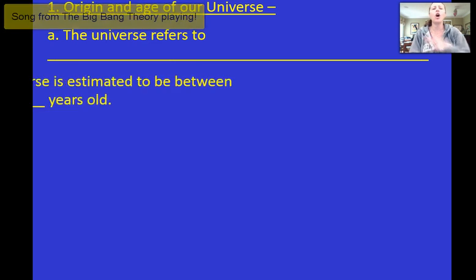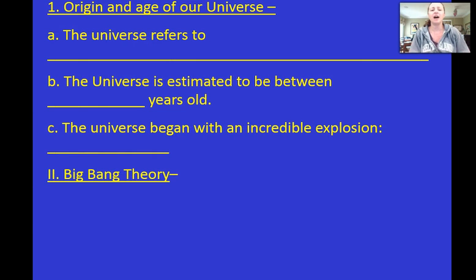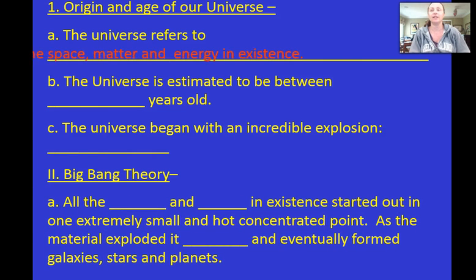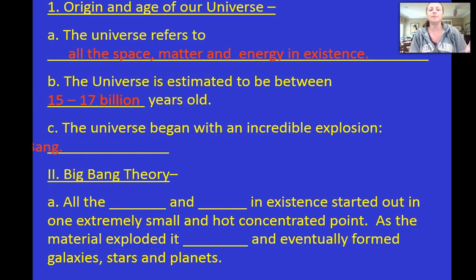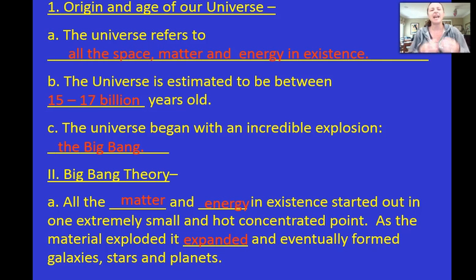So when we talk about the universe, what we're really talking about are all of energy, matter, space, everything that's in existence, really. And it's estimated to be about 15 to 17 billion years old. Now, it started with this incredible explosion known as the Big Bang and we call it now the Big Bang Theory, where it really means that all of energy, matter, and space existed. It did not exist at all. And it came out of this explosion that everything formed from.